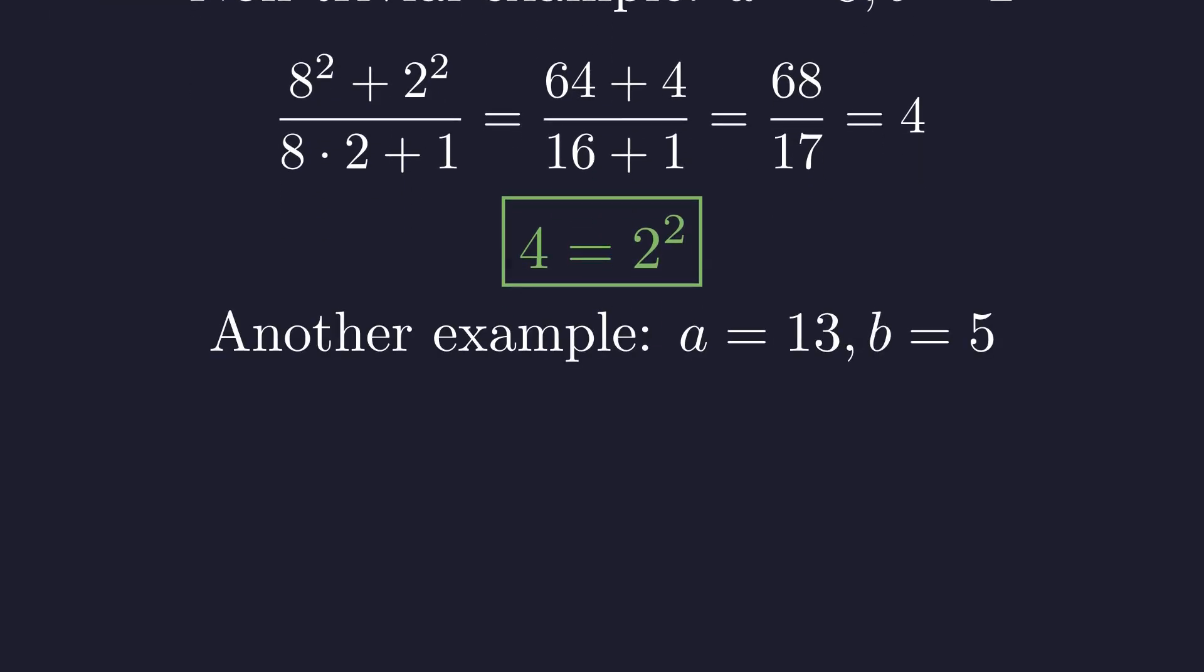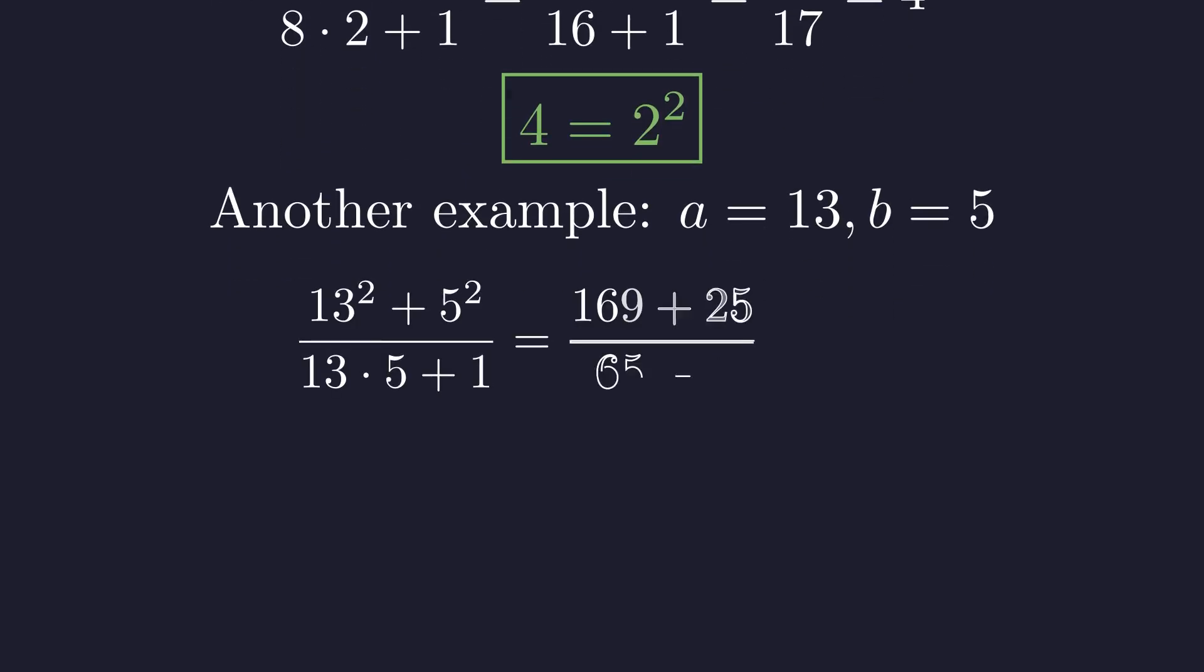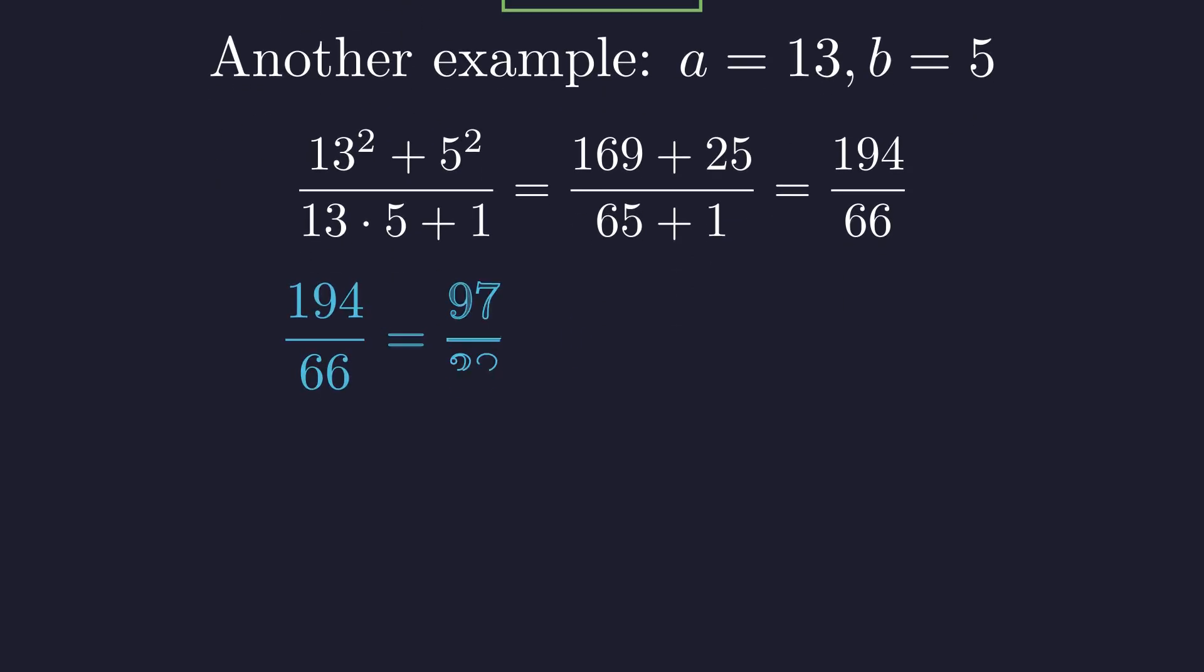Let's try one more: a equals 13 and b equals 5. This gives us 169 plus 25 divided by 65 plus 1, which equals 194 divided by 66. This simplifies to 97 over 33, which is not an integer, again confirming our theorem.